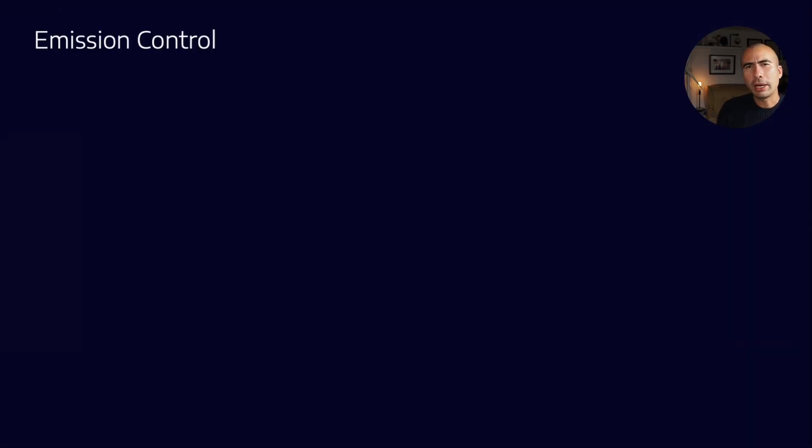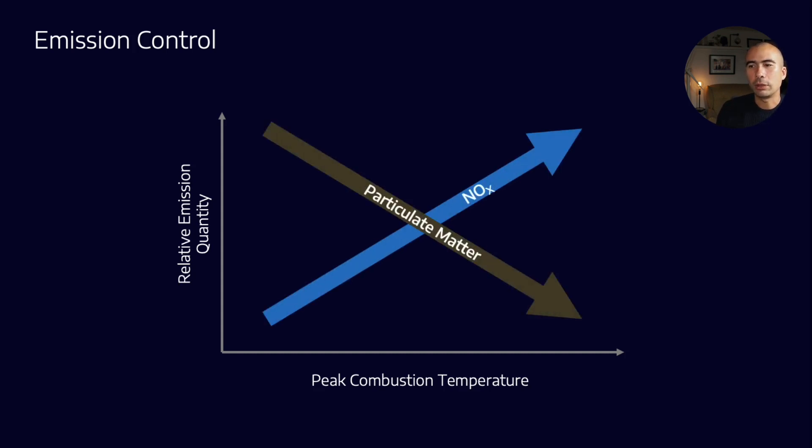So let's talk about emissions control and what it's trying to achieve. The two main categories are particulate matter and NOx. The problem with these is that they run counter to each other. So if I increase the combustion temperature in the engine, I get a reduction in the amount of particulate matter, but NOx increases. Now, intuitively, why does particulate matter decrease?